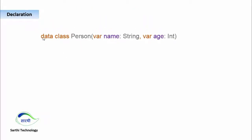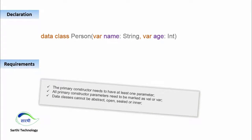The declaration of a data class is very simple — just add a data keyword before the class and the rest is the same. There are some requirements: first, the primary constructor needs to have at least one parameter. Second, all primary constructor parameters need to be marked as val or var. Third, data classes cannot be abstract, open, sealed, or inner. If these requirements are fulfilled, we can create a data class.